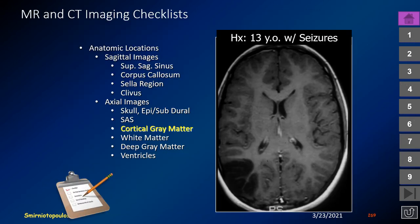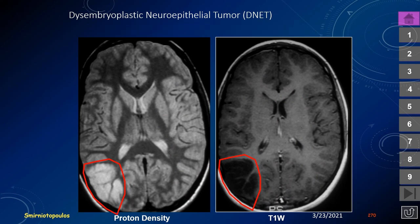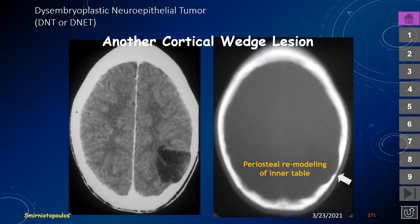For cortically-based lesions, consider clinical context. A 13-year-old with seizures is not the typical presentation for cerebral ischemia. A bubble-like cortical wedge appearance suggests dysembryoplastic neuroepithelial tumor, or DNET. Another DNET shows periosteal remodeling of the inner table of the skull — a sign that can be produced by any superficial mass lesion. Oligodendrogliomas can also arise in the cortex with a long clinical course before presentation and may show similar inner table remodeling.